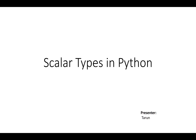Hello everyone, today I would like to share something about the scalar types in Python. The scalar types are actually integer, float, null, and the boolean types.